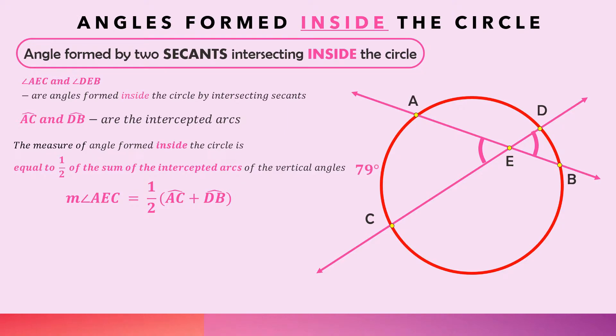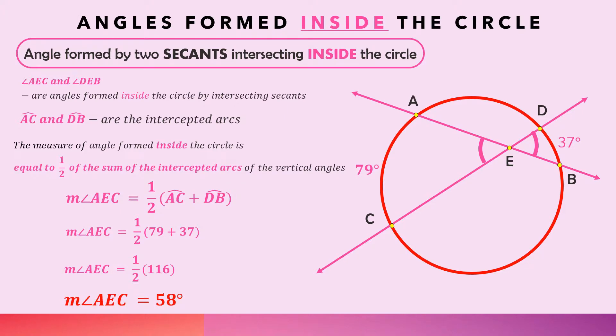For example, arc AC is 79 degrees and arc DB is 37 degrees. To solve for angle AEC, we substitute: measure of angle AEC equals one half of (79 + 37), which gives one half of 116, and that equals 58 degrees. Since angle AEC and angle DEB are vertical angles, angle DEB is also 58 degrees.